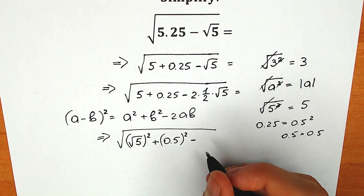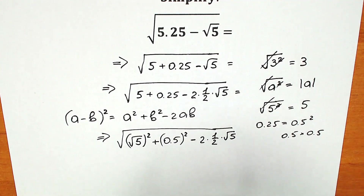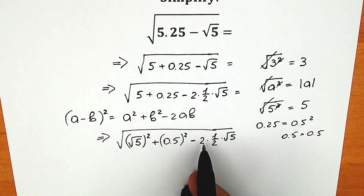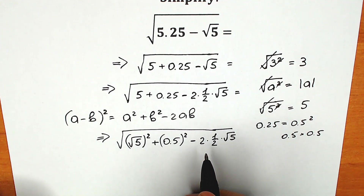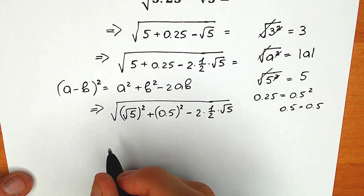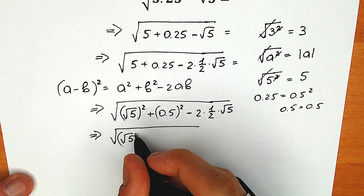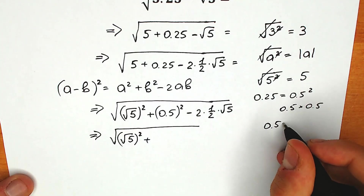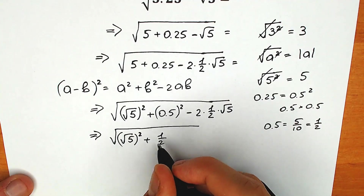Now let's rewrite this. We have 2 times 1/2 times square root of 5. If you look closely, we have something in common. We have a², b², and a factor of 2. Let's rewrite both expressions using fractions for better understanding. So we have (√5)², plus (1/2)² — since 0.5 equals 1/2 — and minus 2 times square root of 5 times 1/2.